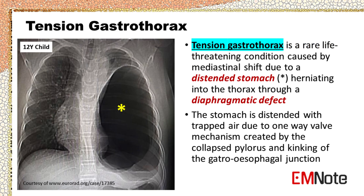Tension gastrothorax is a rare life-threatening condition caused by mediastinal shift due to a distended stomach herniating into the thorax through a diaphragmatic defect. The stomach is distended with trapped air due to a one-way valve mechanism created by the collapsed pylorus and kinking of the gastroesophageal junction.